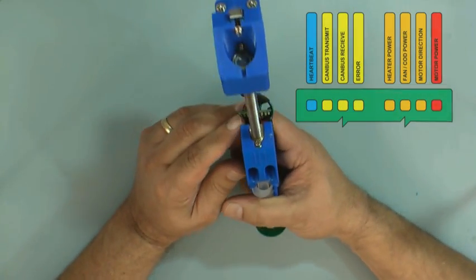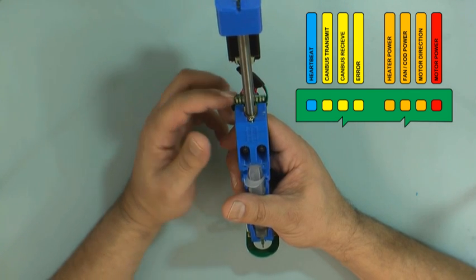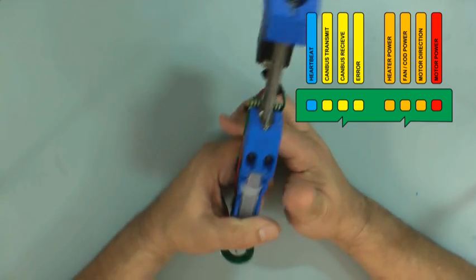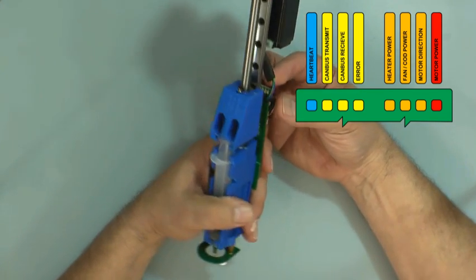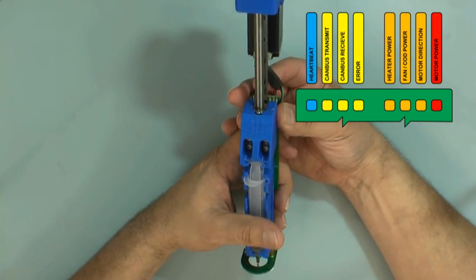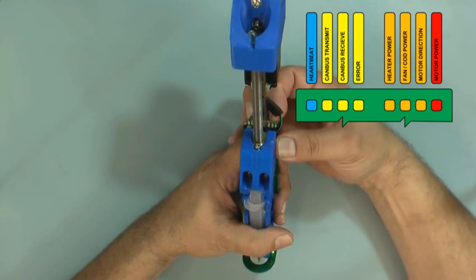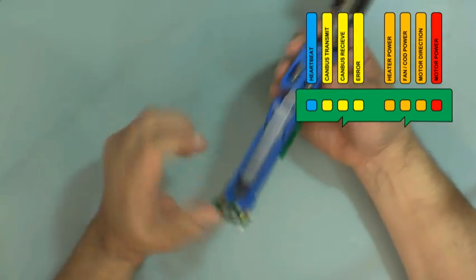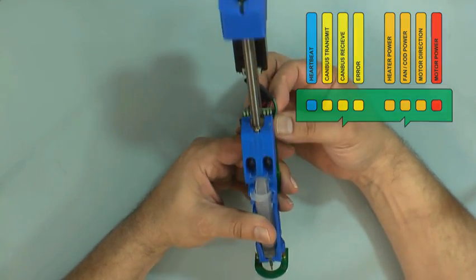The LEDs are the same as all of our LEDs. If you can see them on there, it's heartbeat, can bus, transmit, receive, error. On the other side, there's no heater on this one. We do have a heated version called the heated syringe dispenser or the volcanic syringe dispenser, which gets up to 75C. So the first light on the right side would be heater power. And then the fan light indicates when the LEDs are active. And then there's motor direction and motor power.